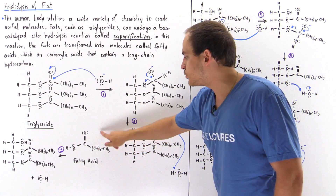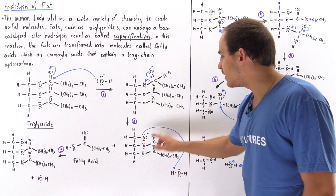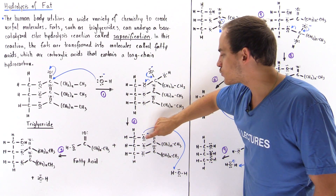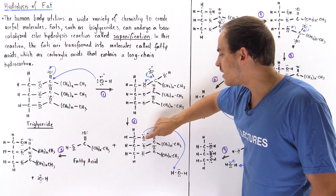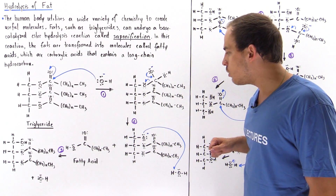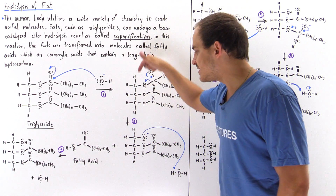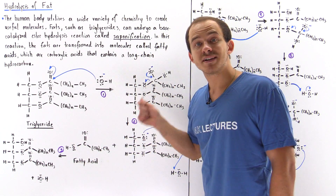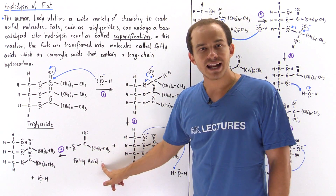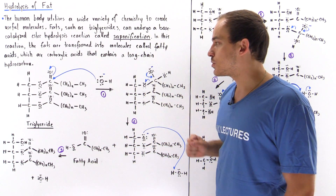In this case, we produce the carboxylic acid as well as this molecule, which contains a lone pair of electrons on this oxygen, giving it a negative charge. This molecule produced in step two is the carboxylic acid we call the fatty acid — this is the first fatty acid produced. Remember, we produce three fatty acids per one triglyceride molecule.